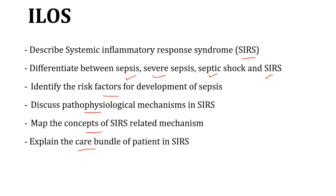By the end of this lecture, you have to be able to describe the meaning of Systemic Inflammatory Response Syndrome, differentiate between different terminology — sepsis, severe sepsis, septic shock, and Systemic Inflammatory Response Syndrome — identify the risk factors for the development of sepsis, discuss the pathophysiological mechanism of sepsis, identify the concept map and its related mechanism, and finally explain the most common care bundles for patients with Multiple Organ Dysfunction Syndrome.